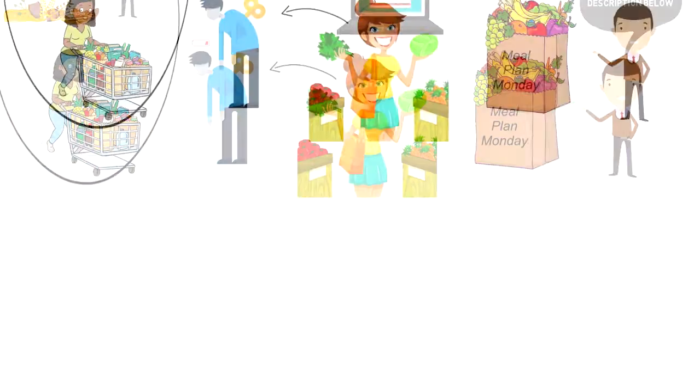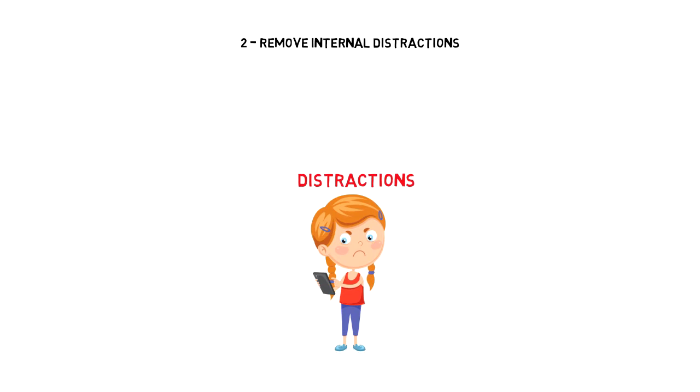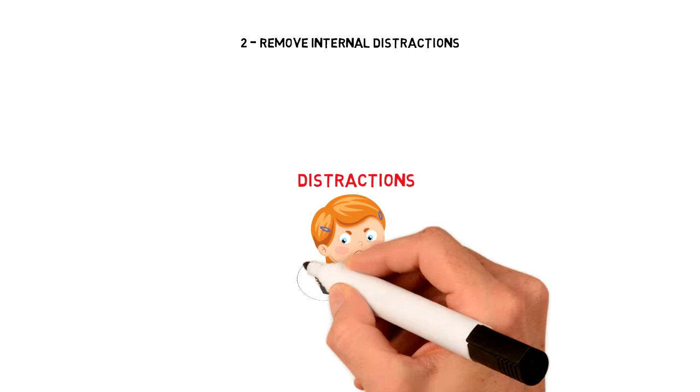Number two, remove internal distractions. We often hear that everyone is blaming smartphones and social media as the biggest distraction of our time. But before we make any judgments, let's take a look from a different perspective. If it was all down to our smartphones and social media, then we could simply switch off our phones and work undistracted.